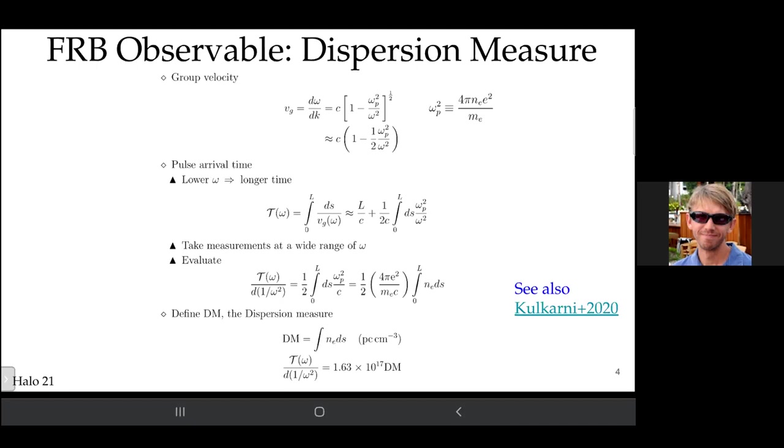This is kind of 101 electromagnetism. The velocity of the lower frequency radiation is slower than the higher frequency, hence that sweep you saw in the previous figure. It's characterized by the dispersion measure DM, which is in the bottom equation down there.